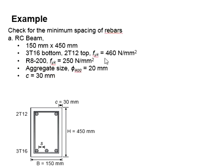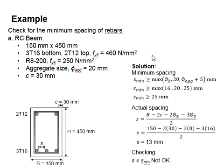You may pause the video for a while for you to work out the solution. In order for you to calculate the minimum spacing, the three aspects are: the biggest bar size, 20 mm, and the size of aggregate plus 5. In this case, the largest bar size is 16.